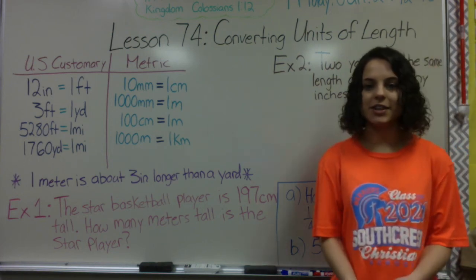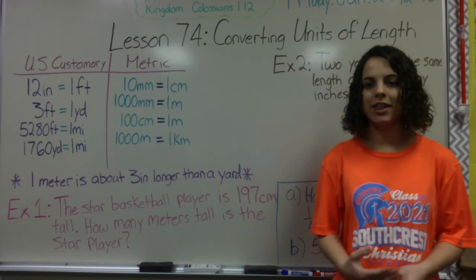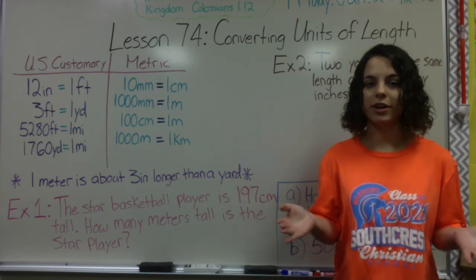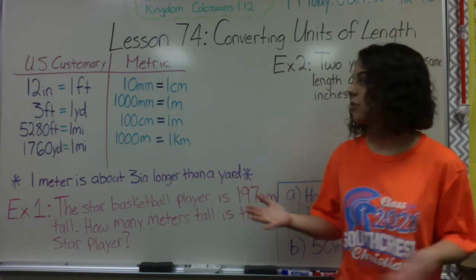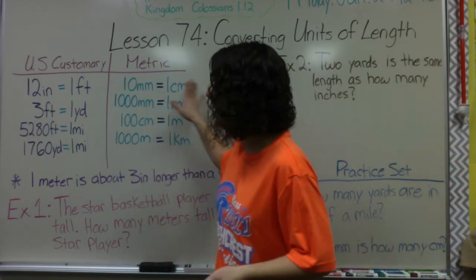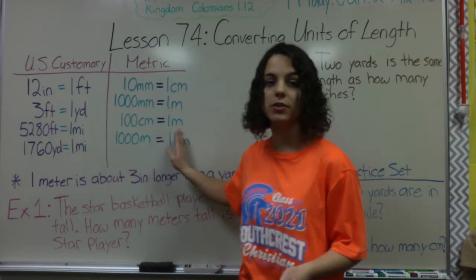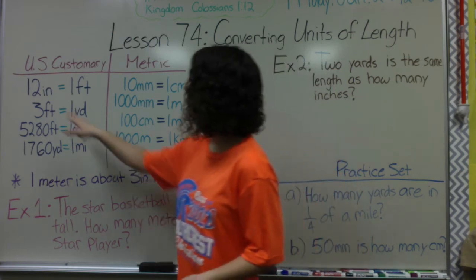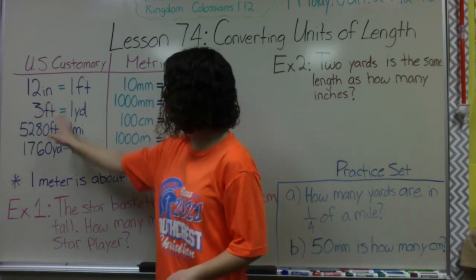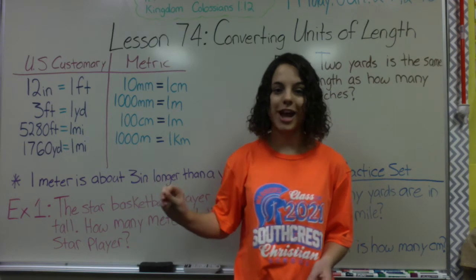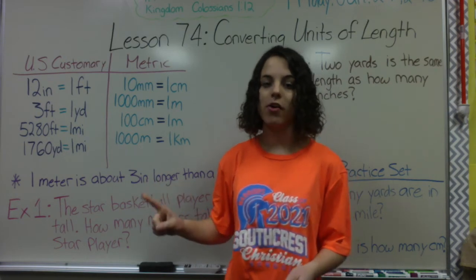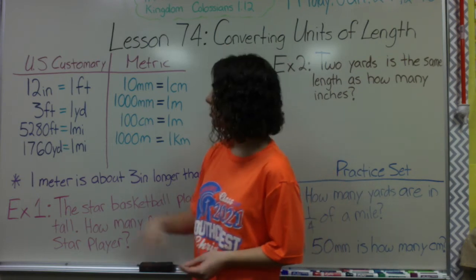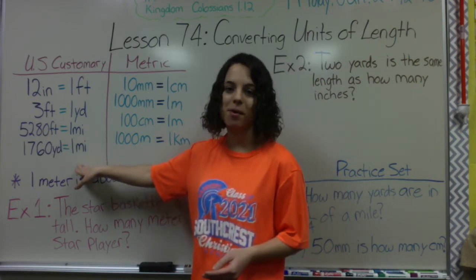Hello, welcome to lesson 74. This is converting units of length. There are many different units of length that you already know, such as 12 inches is one foot and three feet equals one yard. Go ahead and copy this entire table — you already know some of them, but it will be great to have in your notes. We have 12 inches is one foot, three feet is one yard, 5280 feet equals one mile, and 1760 yards equals one mile. These are going to be very helpful when doing the practice set problems.